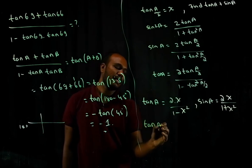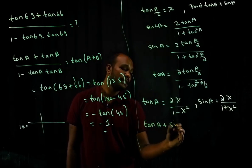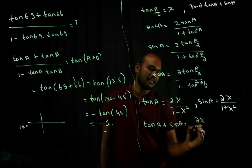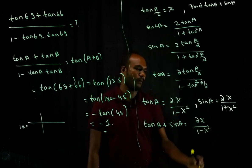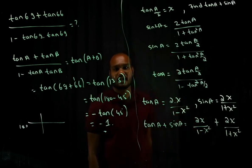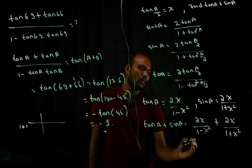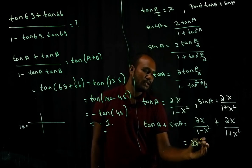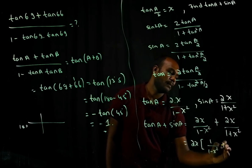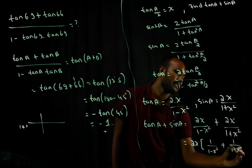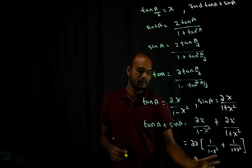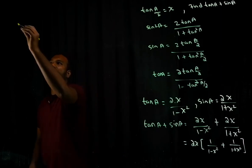Continuing from the last part: tan A + sin A = 2x × [1/(1 − x²) + 1/(1 + x²)]. Taking the LCM: numerator becomes (1 + x²) + (1 − x²) = 2, and denominator is (1 − x²)(1 + x²).